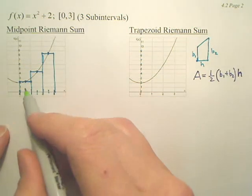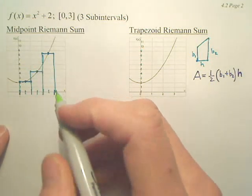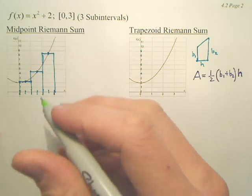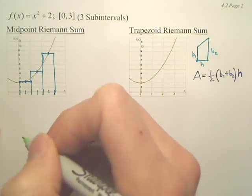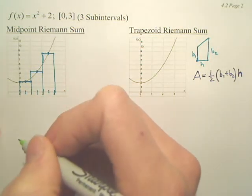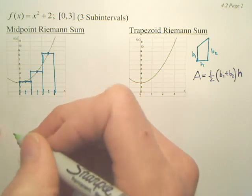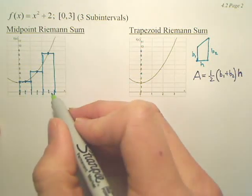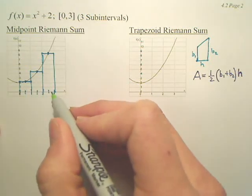Now, is it easy to tell the height by looking at the graph of each rectangle? No. So for this particular problem, you're going to have to plug it into the equation. What is the width of each of these boxes? The width is 1.